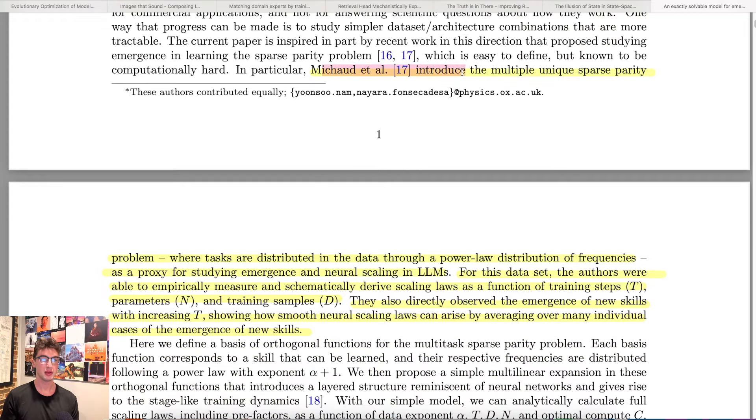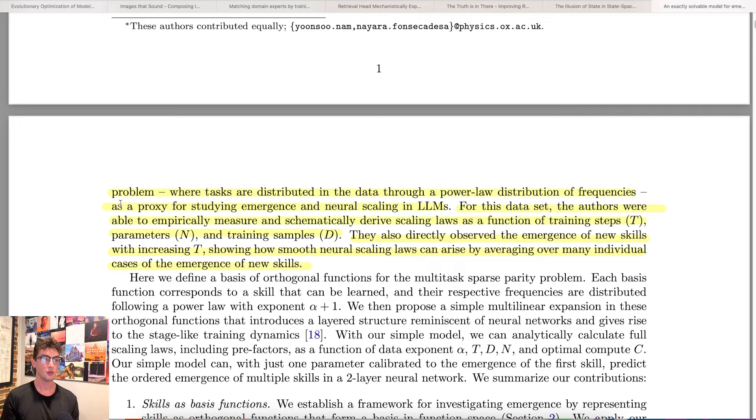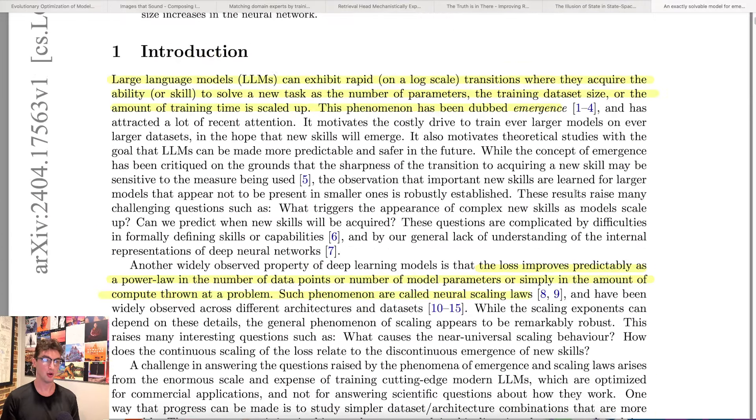Mycad et al. introduced the multiple unique sparse parity problem where tasks are distributed in the data through a power law distribution of frequencies as a proxy for studying emergence and neural scaling in LLMs. For this data set, the authors were able to empirically measure and schematically derive scaling laws as a function of training steps, parameters, and training samples T, N, and D respectively. They also directly observe the emergence of new skills with increasing T, showing how smooth neural scaling laws can arise by averaging over many individual cases of the emergence of new skills. The key point here is that the tasks in the data are distributed according to a power law distribution, hence explaining why the skills show up in a power law distribution as well.